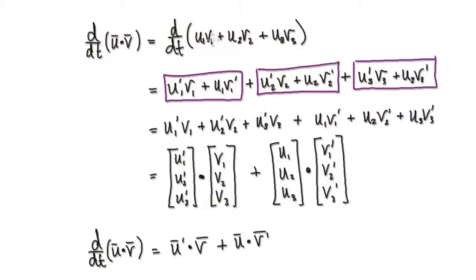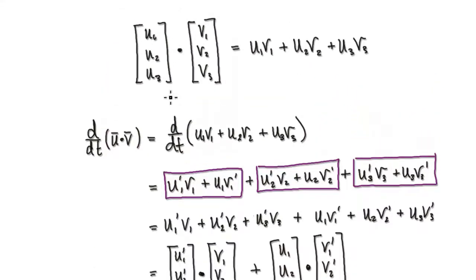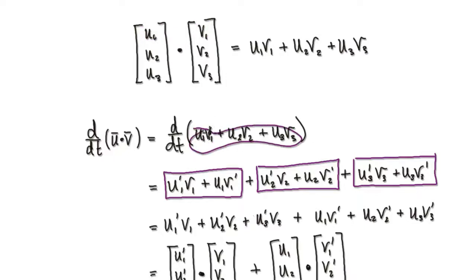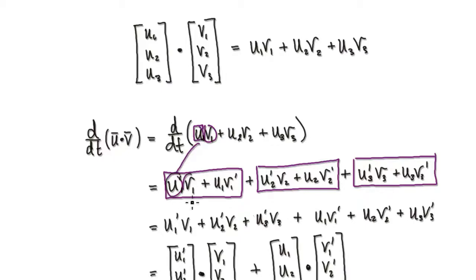Now, if you differentiate this, remember U1 is really the first component of the first vector, and V1 is really the first component of the second vector, and so on. So you're trying to differentiate this whole expression, and you have to use the product rule here. You differentiate the first and leave the second alone, then plus — using the product rule — that will give you this.